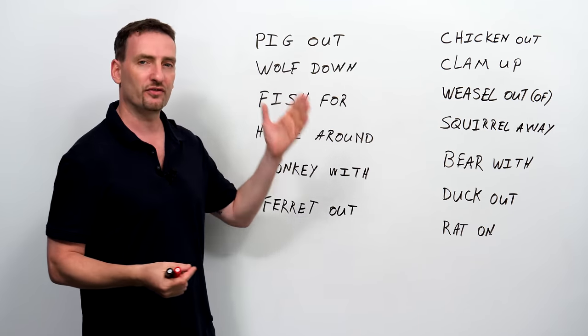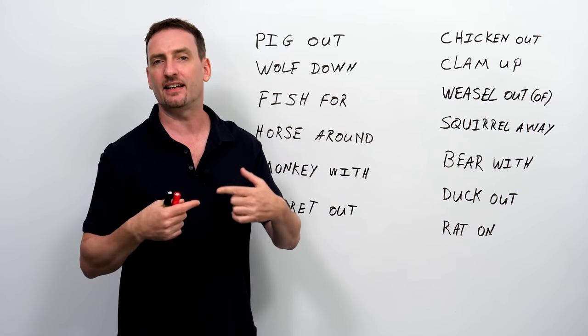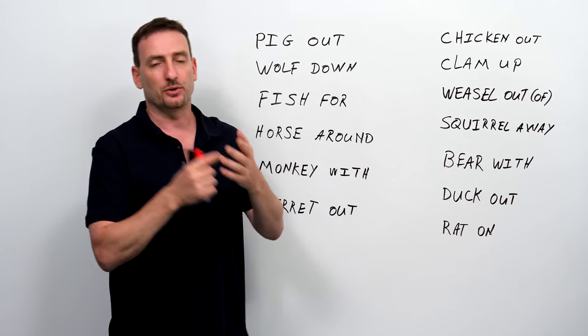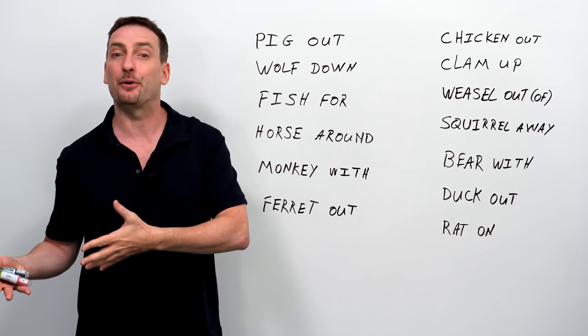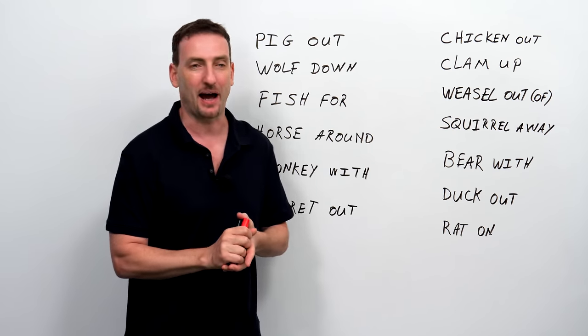If you wolf something down, it means you're eating it very fast. So, some people wolf down their food that they're pigging out on, they can do both things at the same time.